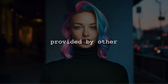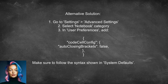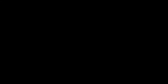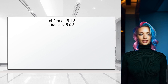Now let's look at an alternative solution. To disable auto quotes and auto brackets in Jupyter 5.0, you can use the advanced settings menu. Go to Settings and select Advanced Settings. Then, in the notebook category under user preferences, add a specific configuration to disable auto-closing brackets. The user also provided their Jupyter version details, which include Jupyter core version 4.7.1 and Jupyter notebook version 6.3.0, among others.